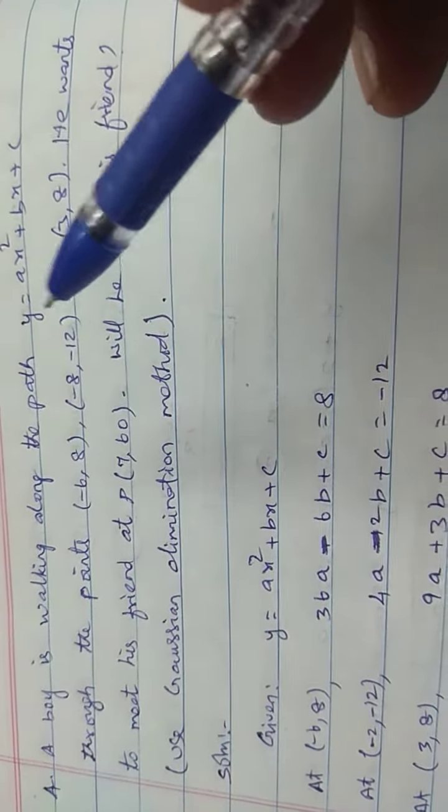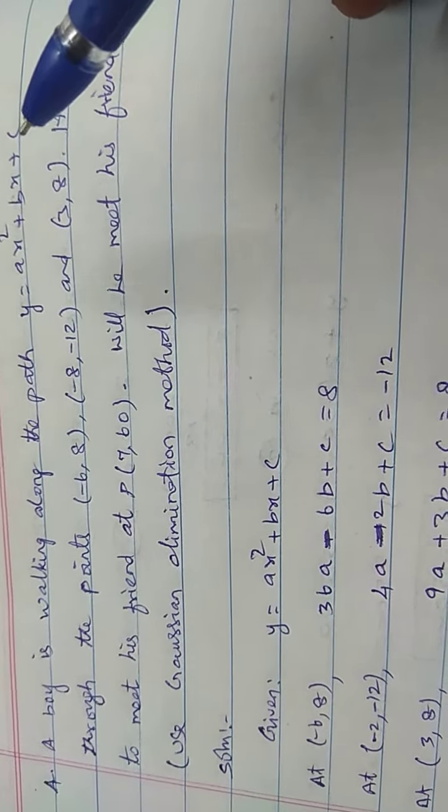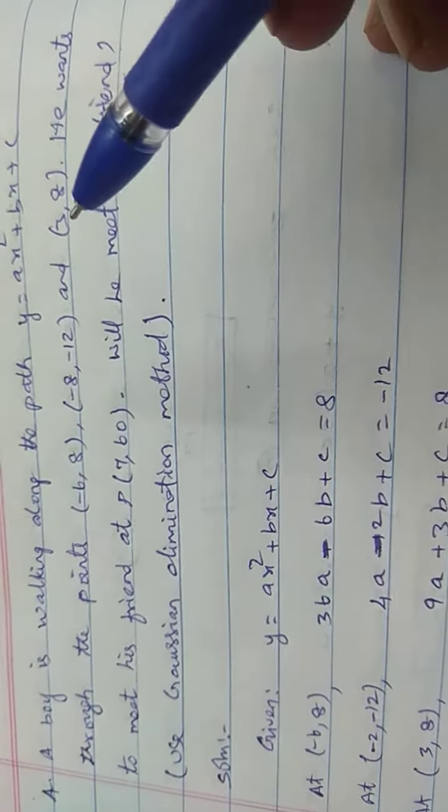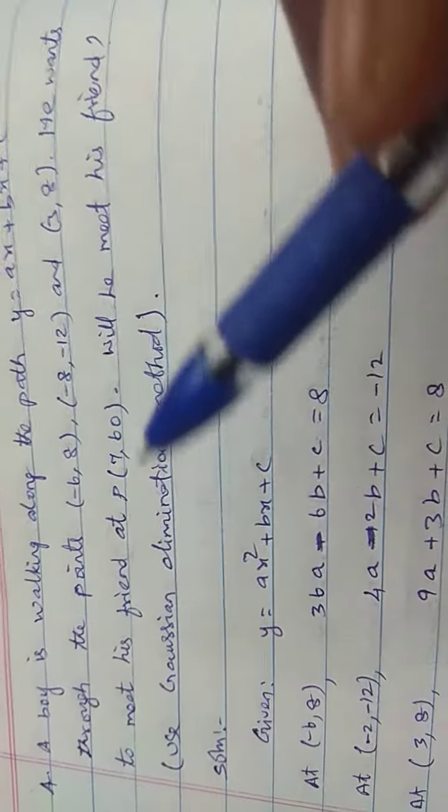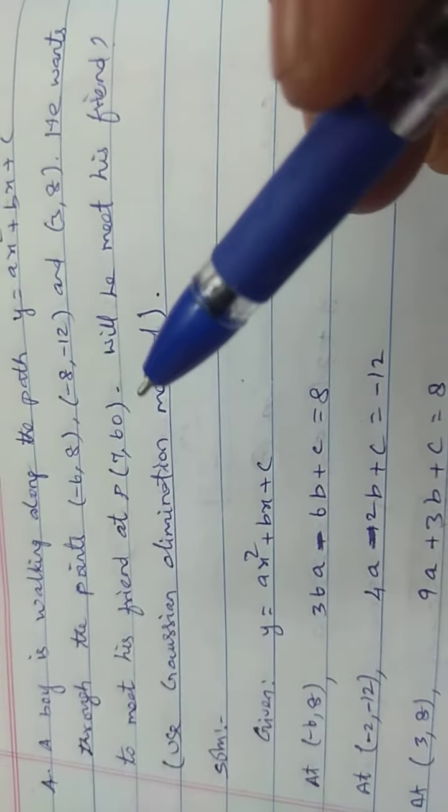A boy is walking along the path y equals ax squared plus bx plus c. He wants to meet his friend at point (7, 60).